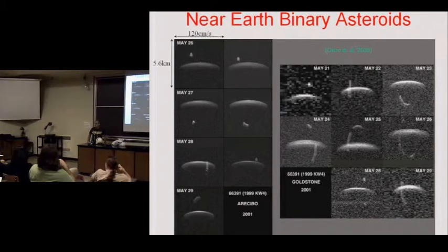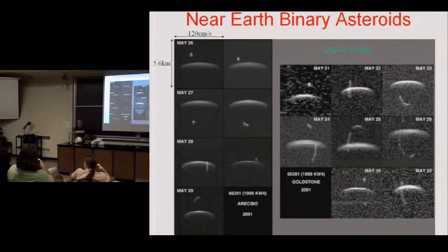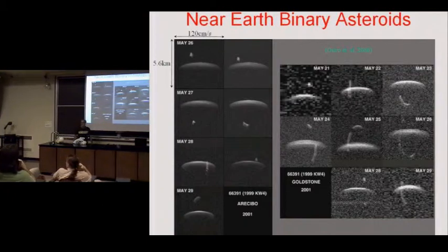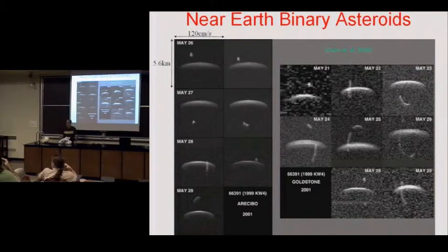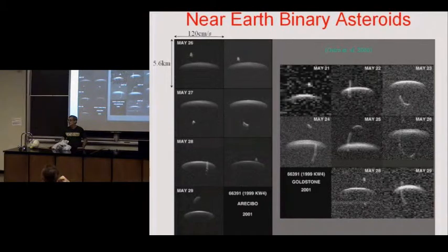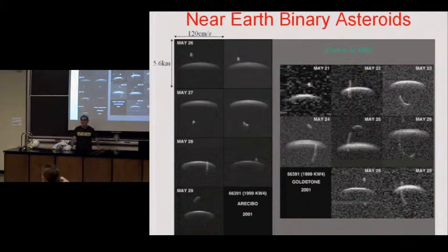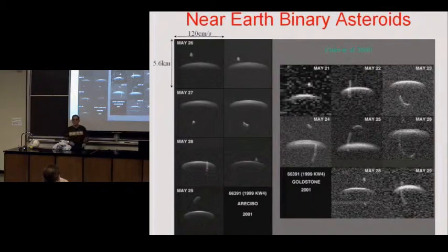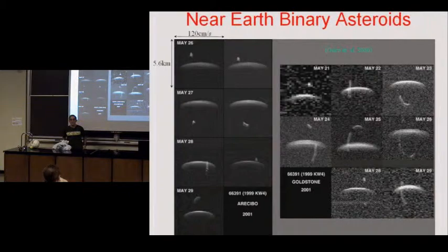These are not rubble piles. But we know that in many cases these small objects are rubble piles because their densities can be measured from their volumes and the orbital motion of their companions. Their densities are much lower than the densities of rocks — typically about half what we would expect for solid rock. The density would be 1.7 where we expect rock to be 3.4. We also know that there are bigger rubble piles in the solar system, and I'll try to explain what the upper limit to the size of a rubble pile is.